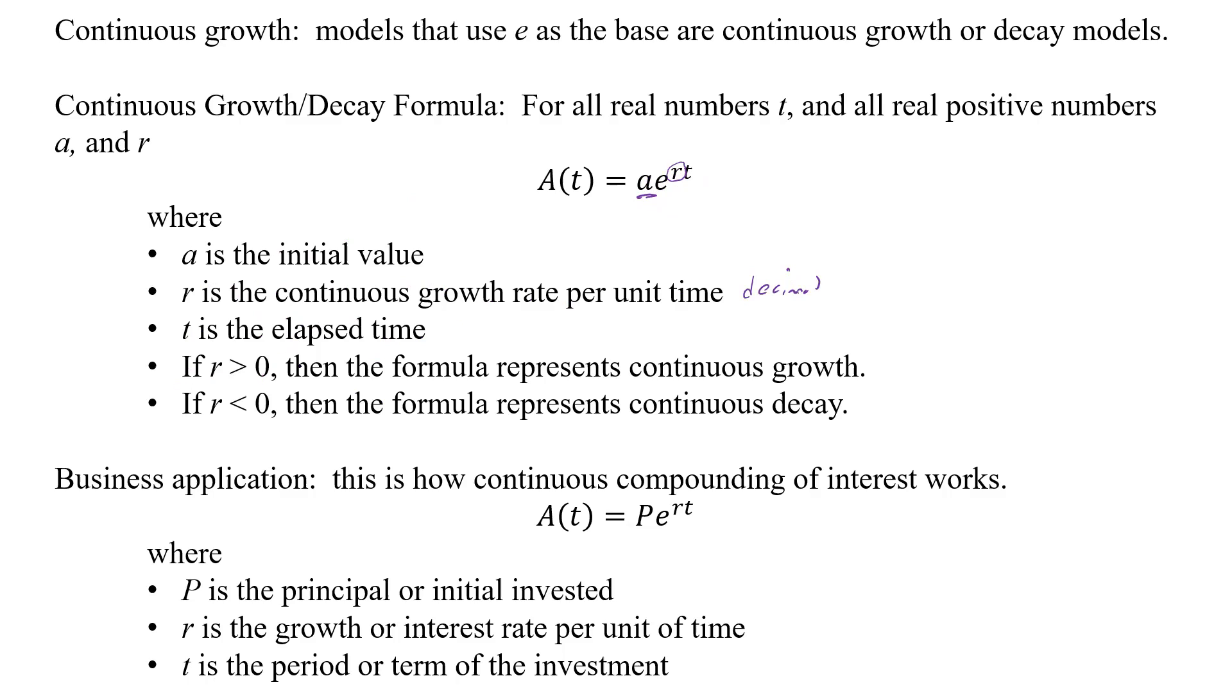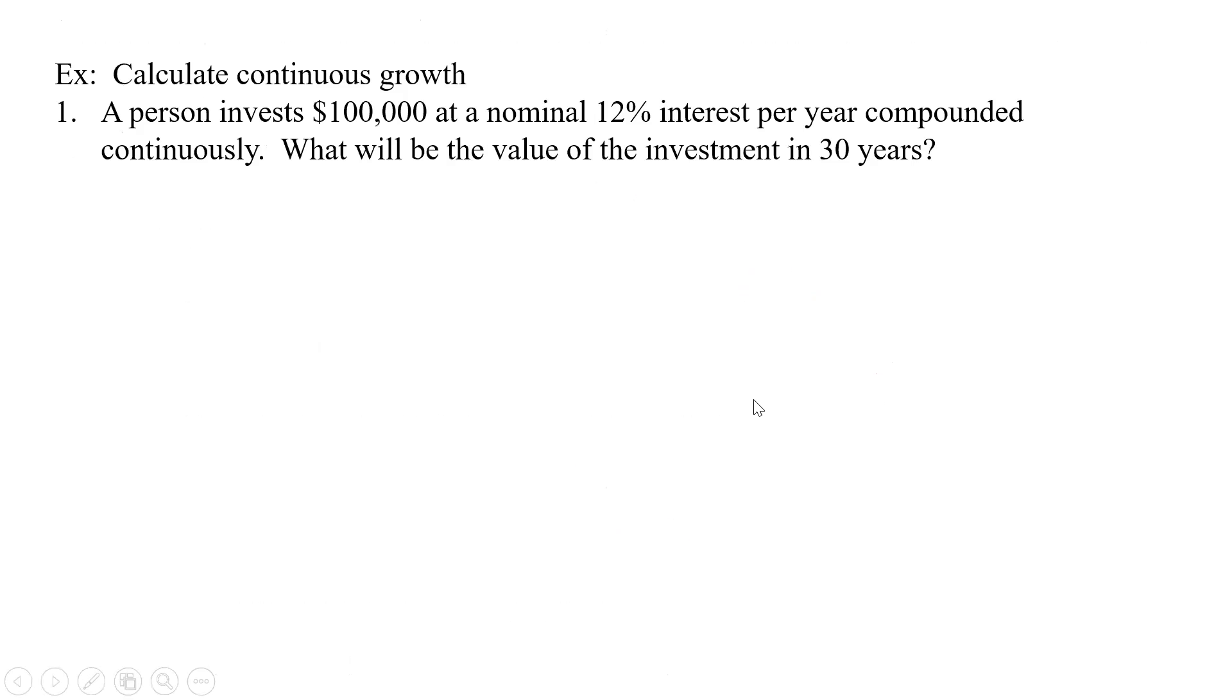If r is greater than zero, then the formula represents growth. And if r is less than zero, it represents decay. Now, if you've been in business classes, you know compounding interest continuously is going to be A = Pe^(rt), P e to the rt. So if you remember PERT, you'll know continuously compounding. P is our principal, r is our interest rate as a decimal, and t is the time we're investing it. So let's do some examples here.